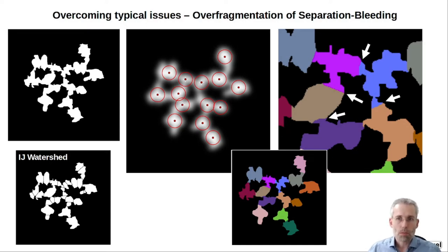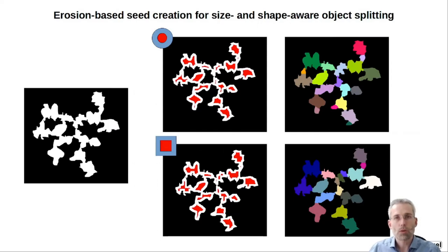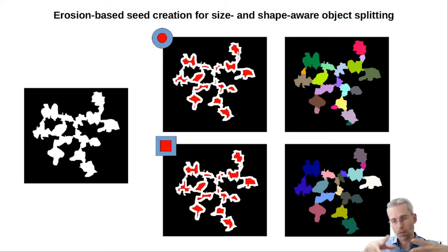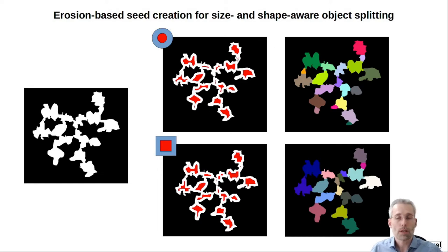Therefore in this toolbox there are two erosion-based methods included. The extracted objects, whether 2D or 3D, are actually eroded in either a sphere or a box environment, creating seed objects displayed here in red. Due to the nature of the erosion these seeds still have some information about the original shape and size of the object, and from those seeds the Voronoi separation is then performed. In most cases this works quite well, especially for bigger objects, but dependent on the erosion amount we might create some small fragments, which may lead to some unwanted separations.